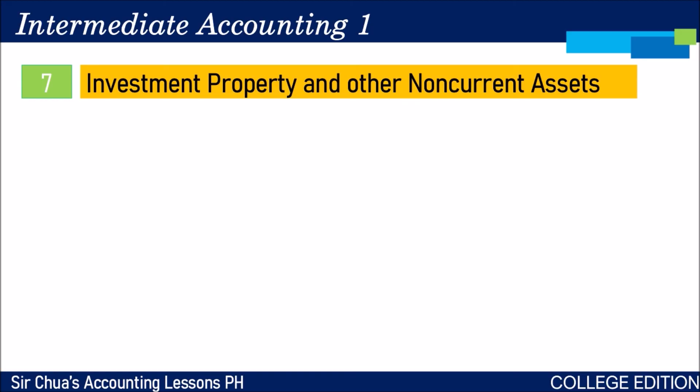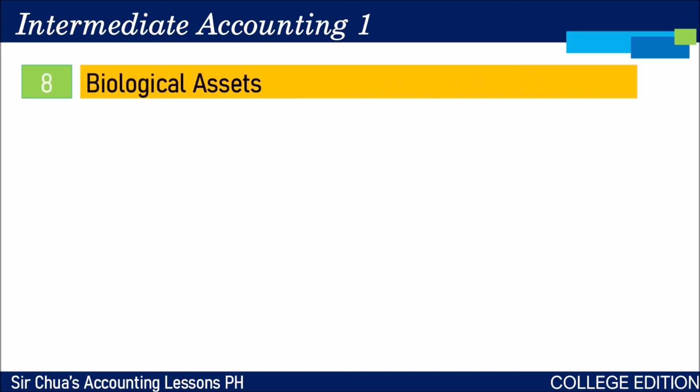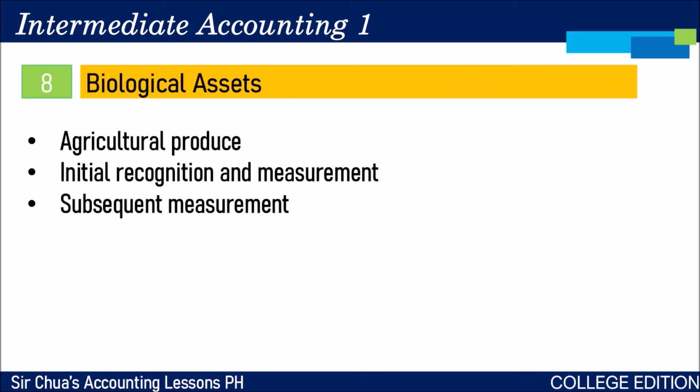We also have investment property and non-current assets — how to properly recognize and measure investment properties, the subsequent measurement of investment properties, and other non-current assets that should be reported in the balance sheet. And then we'll go to biological assets, covering agricultural produce, the initial recognition and measurement of biological assets, and their subsequent measurement.